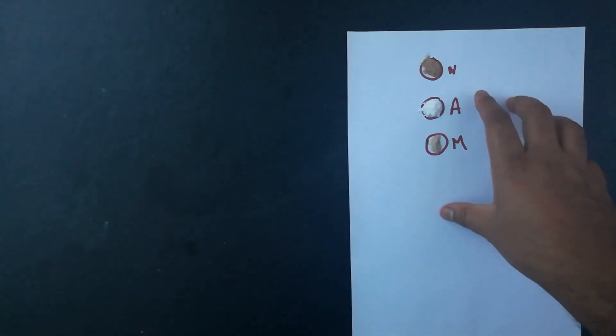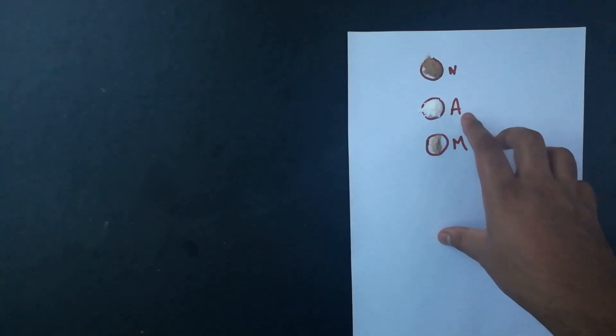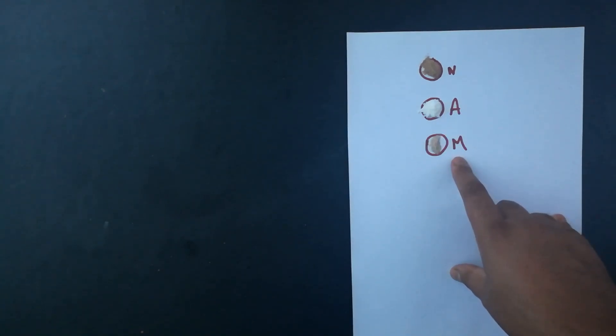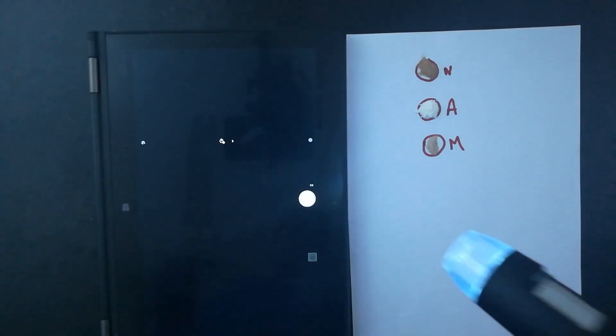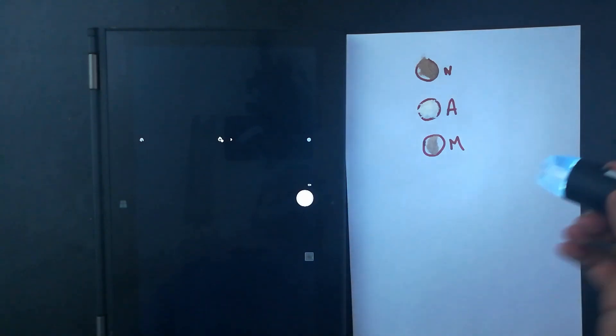Alright, so just for understanding, first one I'm repeating is Nutrimed. It's 70% protein. Then we have As It Is Nutrition, which is like whey isolate and raw. There's no additive, no enzyme, nothing. So it's the purest form. And then we have the Muscle Blaze Beginner's Whey, which is like 50% protein. Now let's put these things under this USB microscope.